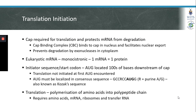Now that we've covered mRNA export, we'll begin discussing the basics of translation initiation. The 5' cap is required for two reasons: firstly, it's required for translation, and secondly, it plays a role in protecting an mRNA from degradation. The cap binding complex binds to the cap in the nucleus and facilitates nuclear export, and it also prevents degradation of the 5' cap by exonucleases in the cytoplasm.